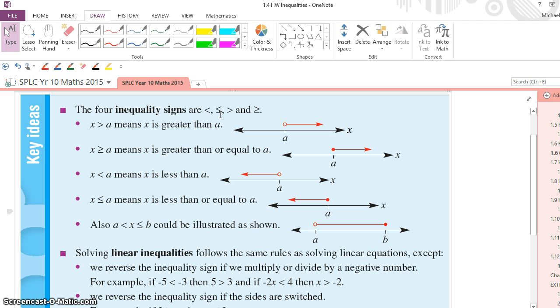We looked at these situations with one variable earlier on. I just wanted to remind everyone that when it was greater than, it was an open circle, and greater than or equal to was a closed circle to show that the point was included.